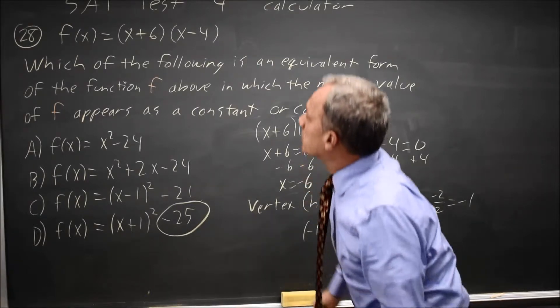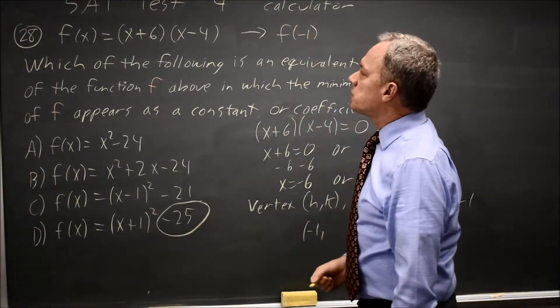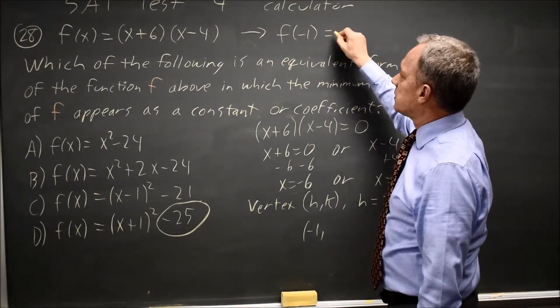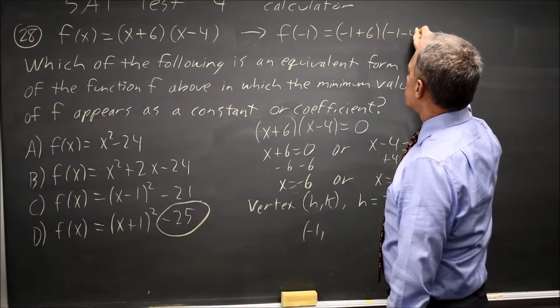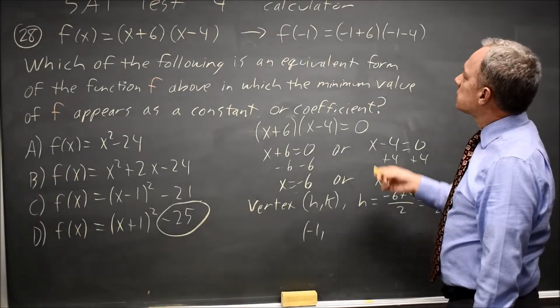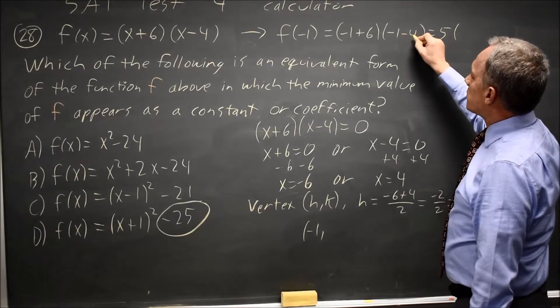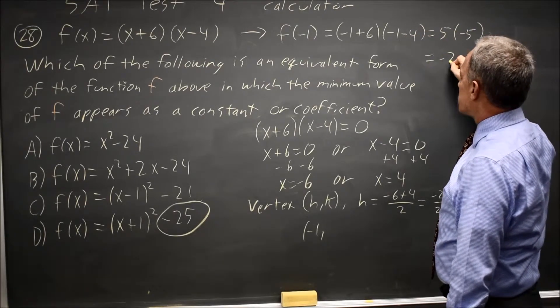And I can substitute negative 1 into F of X to get F of negative 1, which is the Y value when X equals negative 1, the Y value at the vertex. That's negative 1 plus 6, negative 1 minus 4. And this is easier in the factored form than it would be distributed out. Negative 1 plus 6 is 5. Negative 1 minus 4 is negative 5. 5 times negative 5 is negative 25.